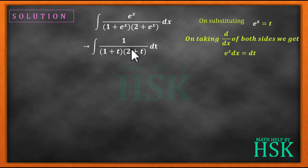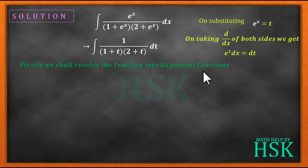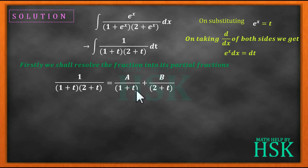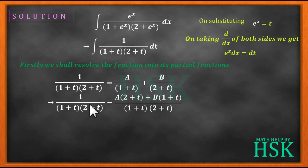After substituting, we see the function is a typical fraction whose denominator is in the form of linear factors. The best way to solve this is to convert it into partial fractions. Since both factors are linear, we write it as A/(1 + t) + B/(2 + t).